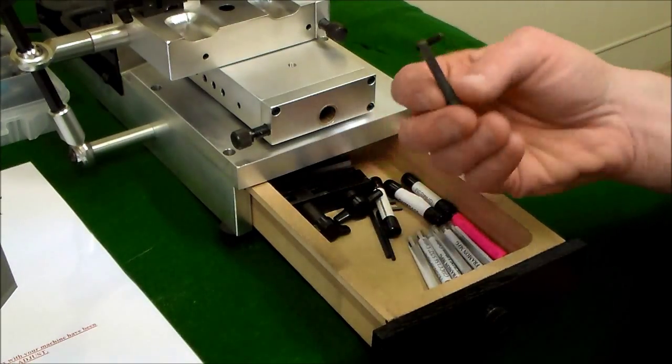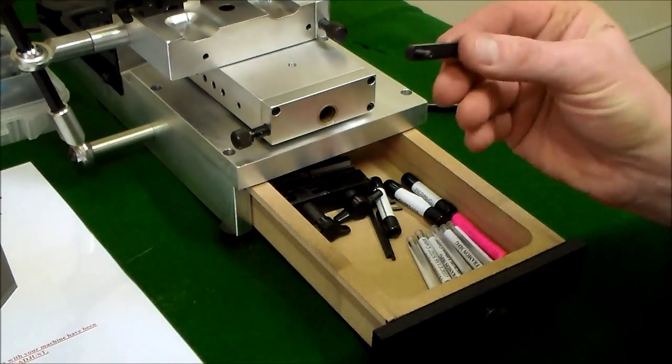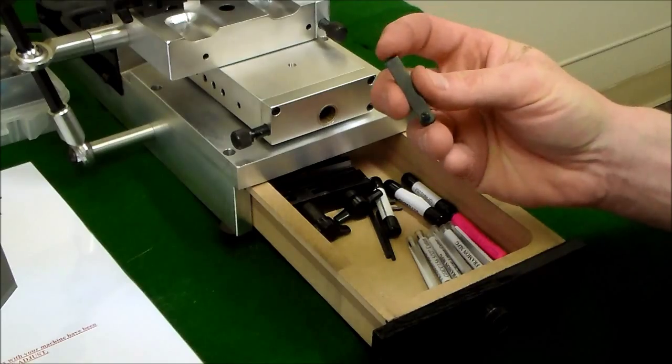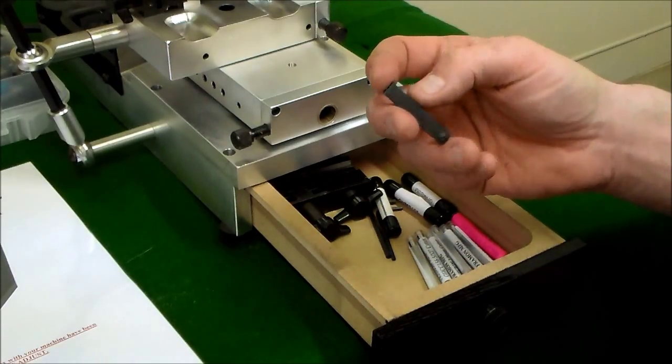Also inside the drawer, you're going to find a funny little piece of black material with a screw through it. That is our handheld tip stop. This will be used for any tip stop keys on the machine, like Honda, Subaru, that type of thing.